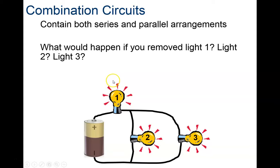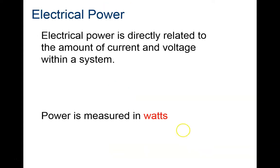Here's a brief look at series-parallel combinations: these two light bulbs are in parallel with each other, and both are in series with this third light bulb. If I remove light bulb one, both of the others go out because I break the circuit. If I remove light bulb two, the other two light bulbs stay lit.